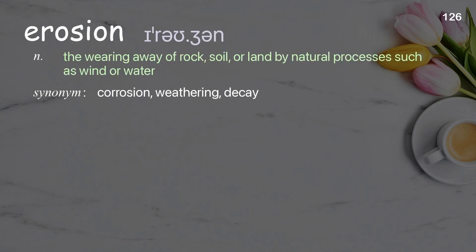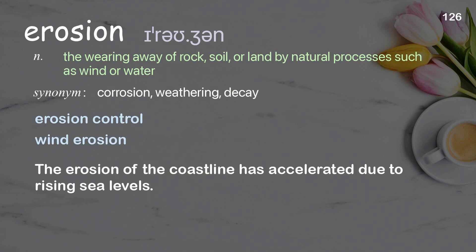Erosion: The wearing away of rock, soil, or land by natural processes such as wind or water. Examples: Erosion control, Wind erosion. The erosion of the coastline has accelerated due to rising sea levels.